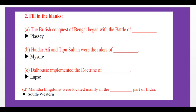Fill in the blanks answers: The British conquest of Bengal began with the Battle of Plassey in 1757. Hyderali and Tipu Sultan were rulers of Mysore. Lord Dalhousie implemented the doctrine of lapse. Maratha kingdoms were located mainly in the south-western part of India.